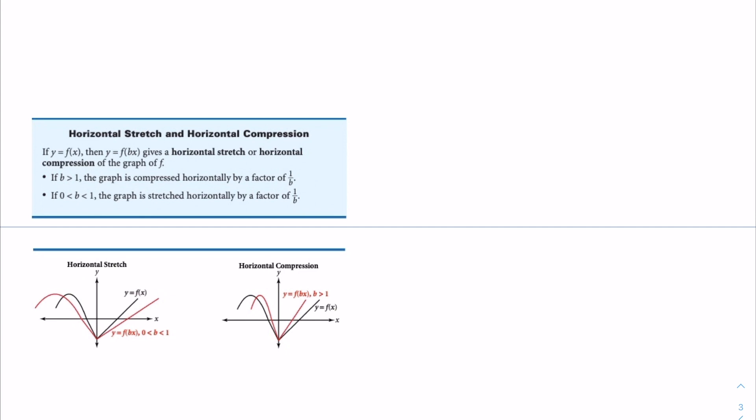The next form of transformation is horizontal stretch and horizontal compression. If y is equal to f of x, then y is equal to f of bx gives a horizontal stretch or horizontal compression of the graph of f. If b is greater than 1, the graph is compressed horizontally by a factor of 1 over b. If 0 is less than b less than 1, the graph is stretched horizontally by a factor of 1 over b.